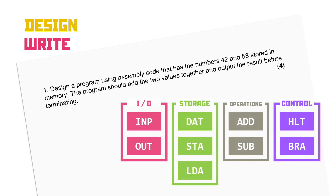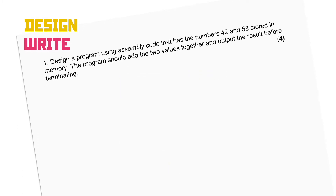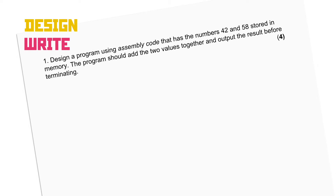How do we tackle designing and writing that code? First things first, we know all the instructions, so let's go through what we've been asked to do one step at a time and convert that into assembly instructions. The question mentions having the two numbers stored in memory, so the first thing we need to do is load the first number. At this point, don't worry about the operands — we'll do that in the second pass. After loading one number from memory into the accumulator, we should be able to use the ADD instruction to add another data value from a different memory location to the accumulator value.